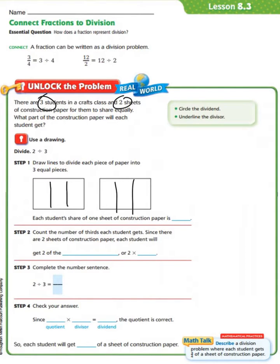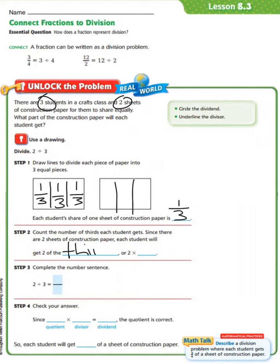Each student's share of 1 sheet of construction paper is 1 third. Because there are 3 students: 1 third for student 1, 1 third for student 2, and 1 third for student 3. Step 2 says to count the number of thirds each student gets. Since there are 2 sheets of construction paper, each student will get 2 of the thirds, or 2 times 1 third.